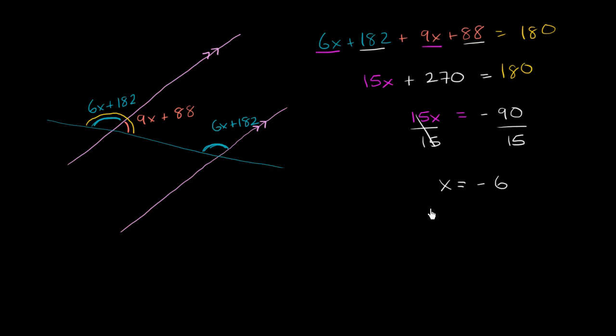So, so far we've made a lot of progress. We've figured out what x is equal to. x is equal to negative 6. But we still haven't figured out what these angles are equal to. So this angle right over here, 9x plus 88, this is going to be equal to 9 times negative 6,